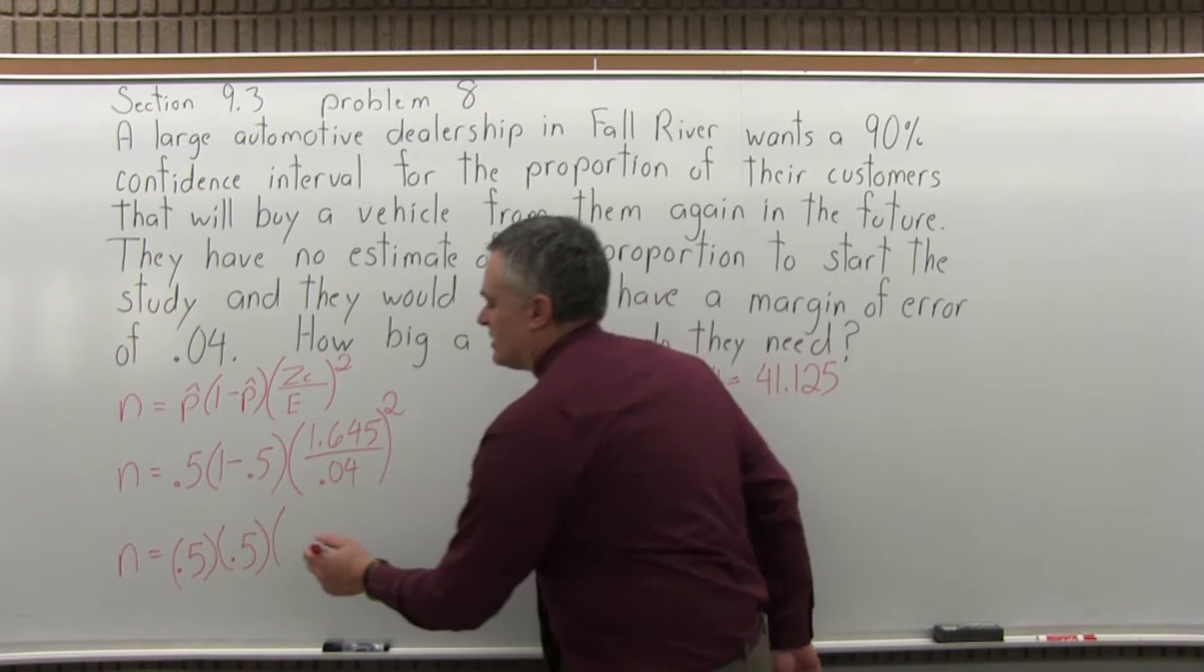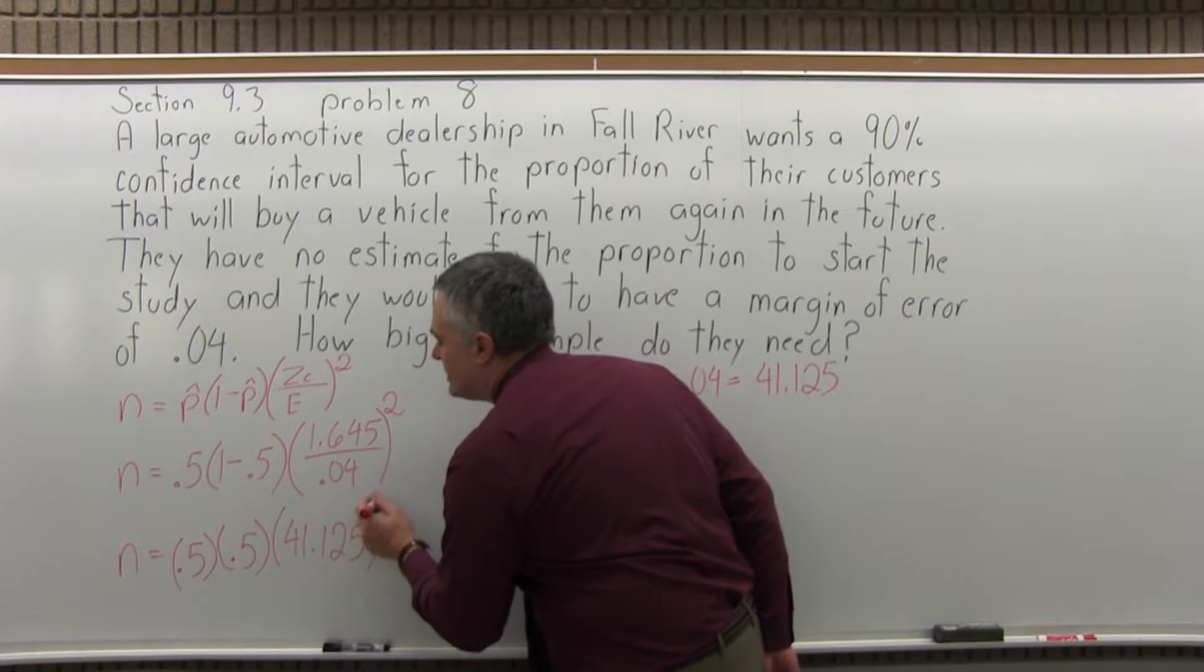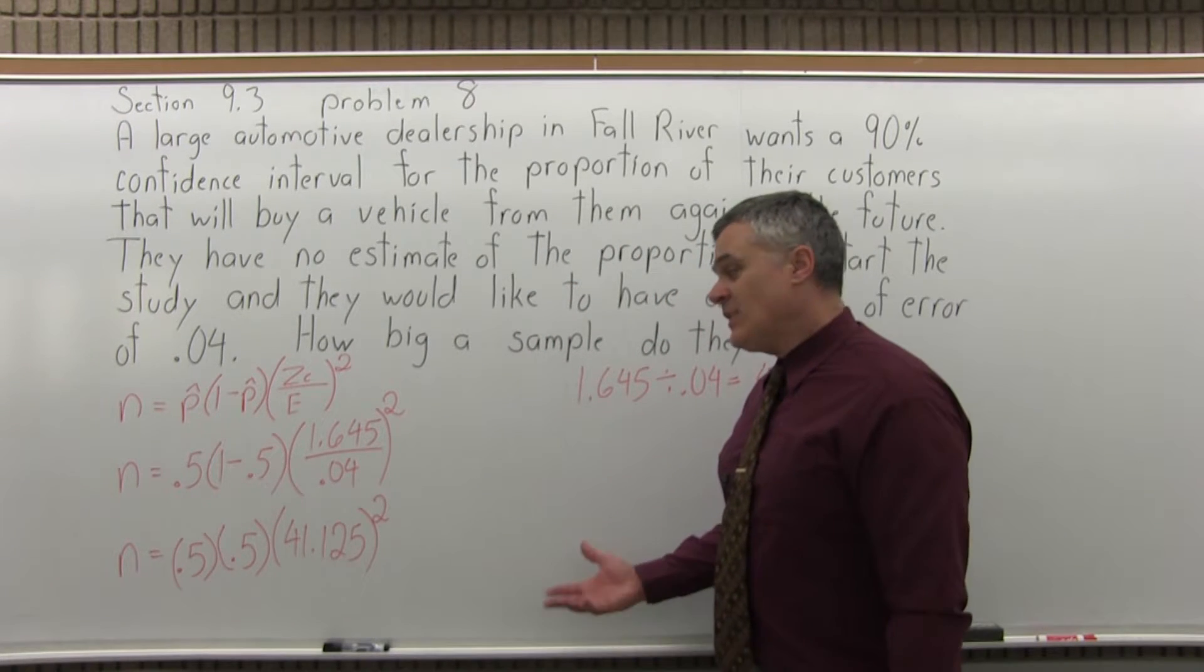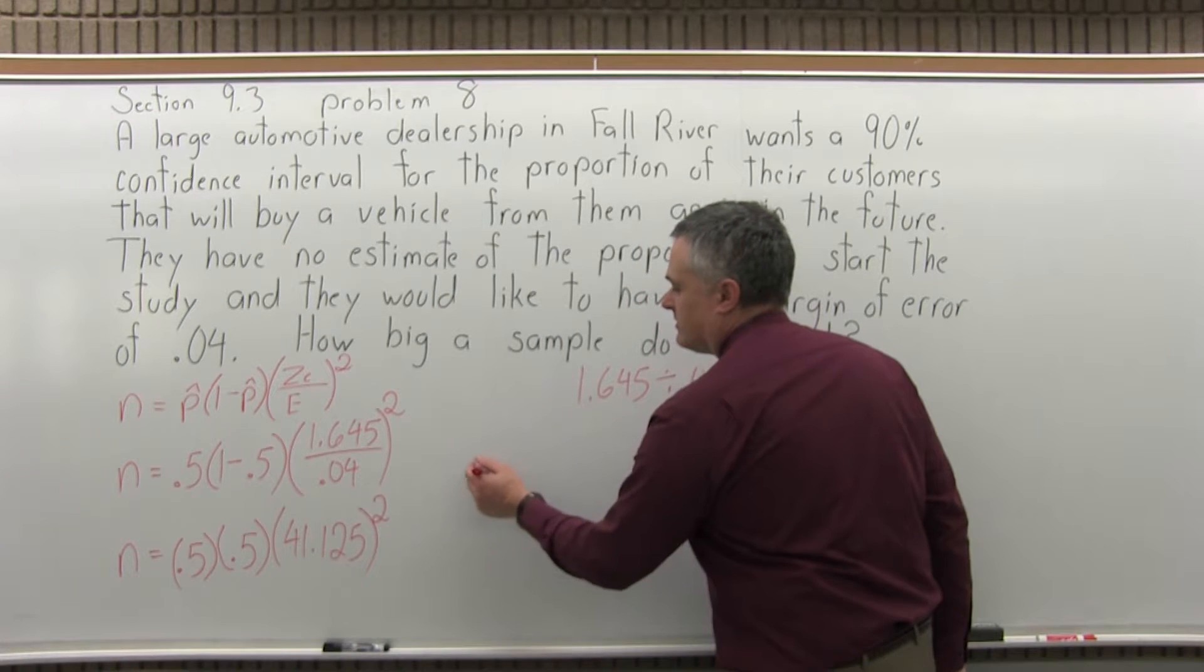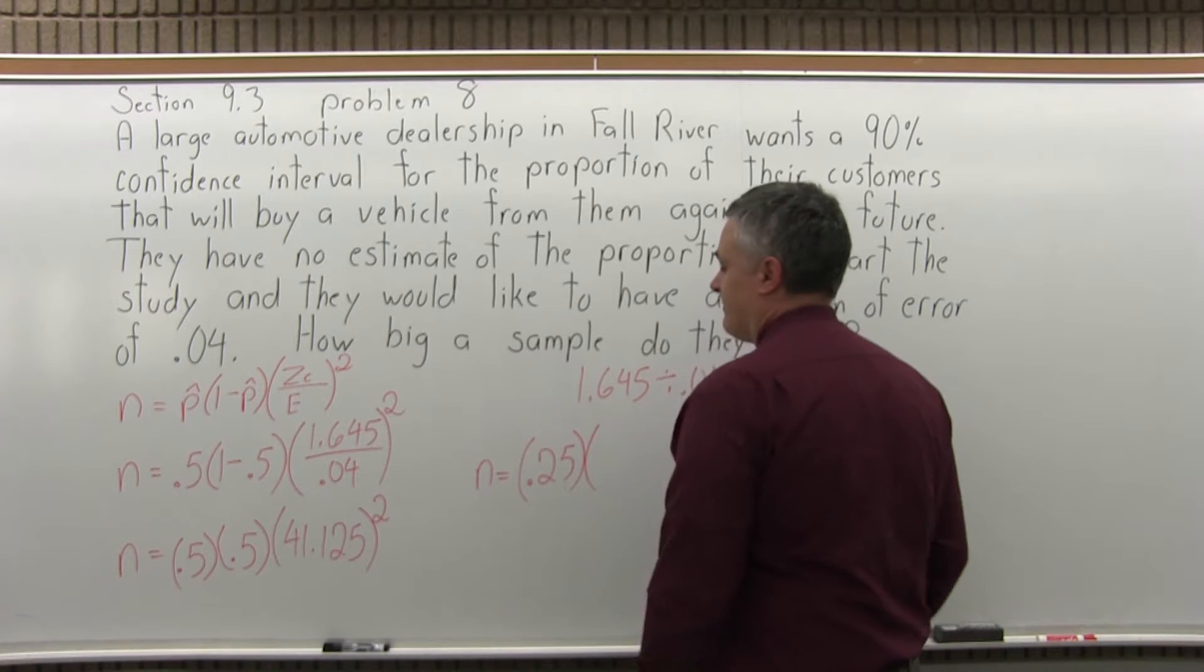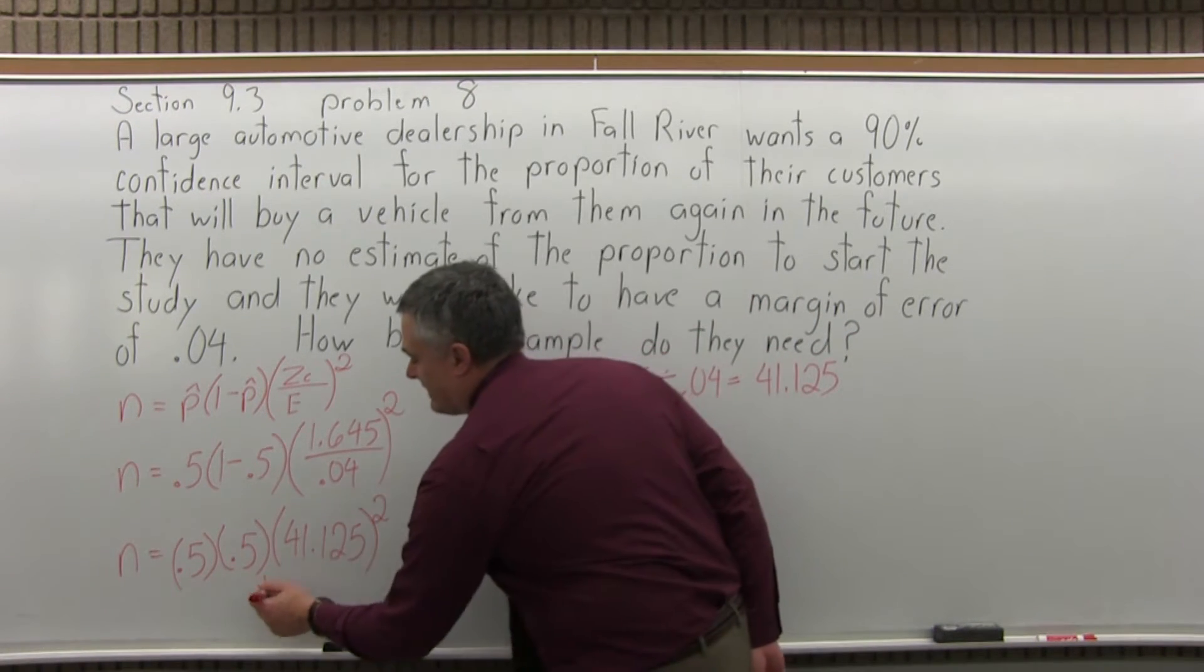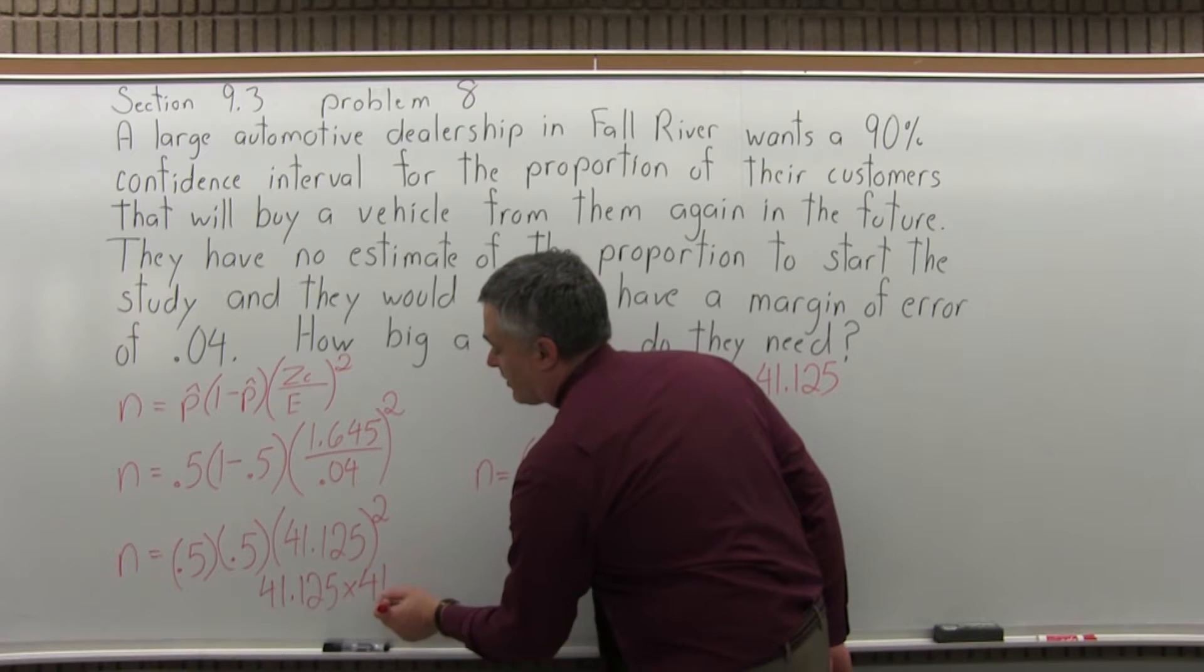That's the result of the division. So 41.125 in parentheses raised to the second power, you can't forget that second power. So getting a little bit closer, .5 times .5 in front of the second power there, you're going to have n is .25. Now, 41.125 second power, that's getting a little beyond what I feel comfortable doing without a calculator.